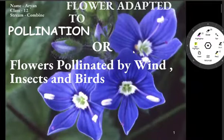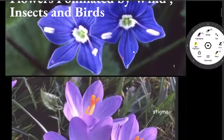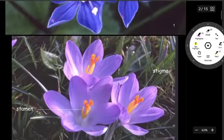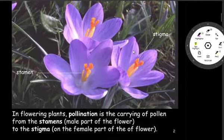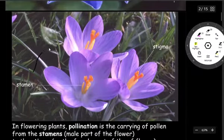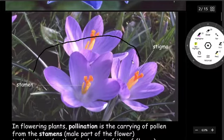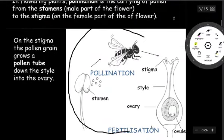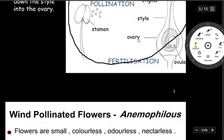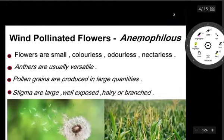Hello everyone, today I will tell you about flowers adapted to pollination — flowers pollinated by wind, insects, and birds. First of all, we should know about pollination. In flowering plants, pollination is the carrying of pollen from the stamens, the male part of the flower, to the stigma on the female part of the flower. This is an example of insect pollination.